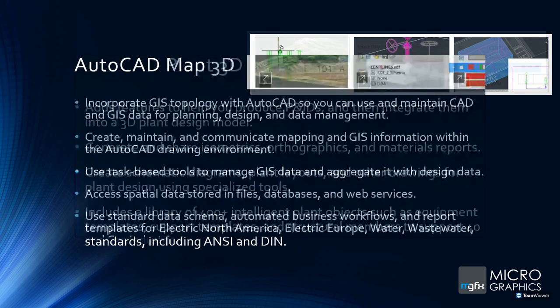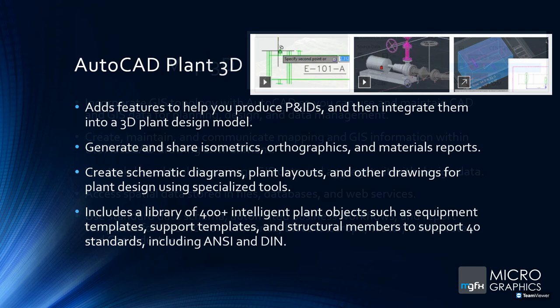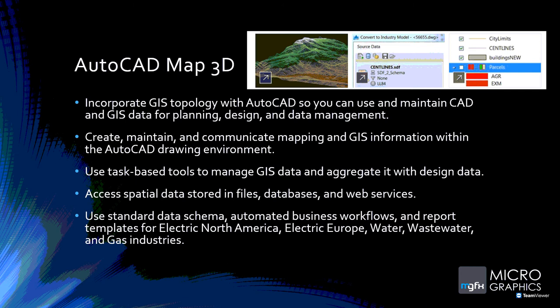AutoCAD Map 3D is the software for you if you work with a lot of GIS data. You can incorporate topology with AutoCAD, create, maintain, and communicate mapping and GIS information within the AutoCAD drawing environment. It has tools specifically for GIS data — useful for town planning, mapping, wastewater, water, and electrical work. It also works in conjunction with AutoCAD Civil 3D, though that product is sold separately and not part of the specialized tool sets.